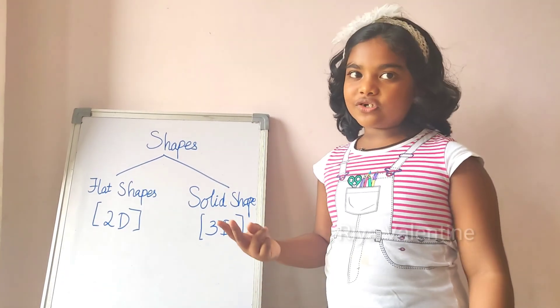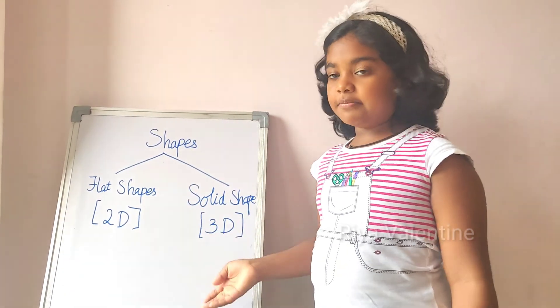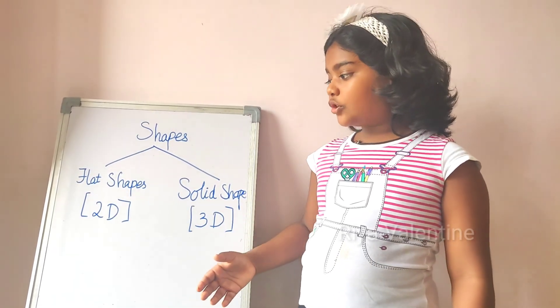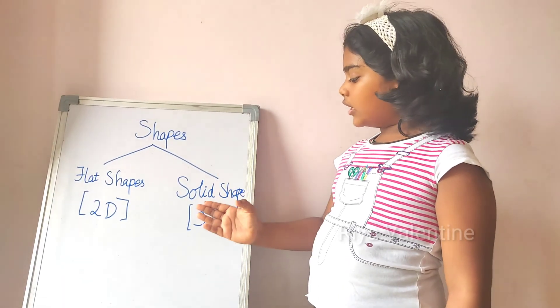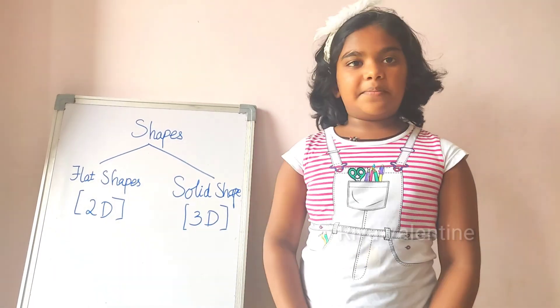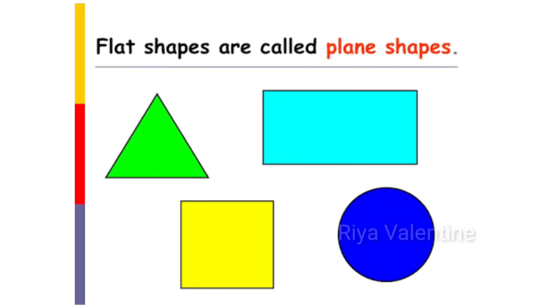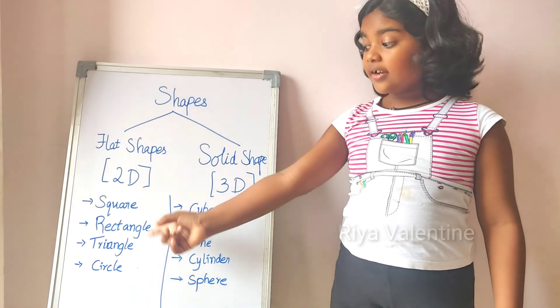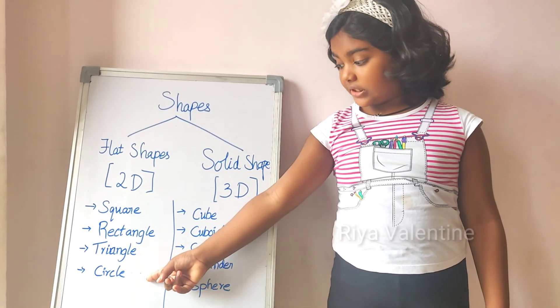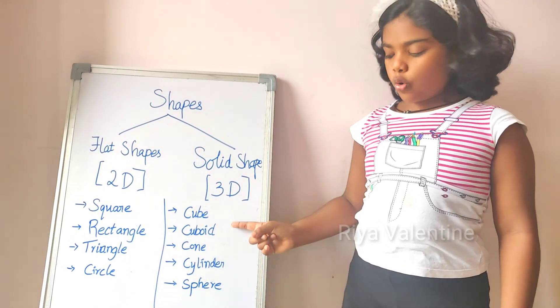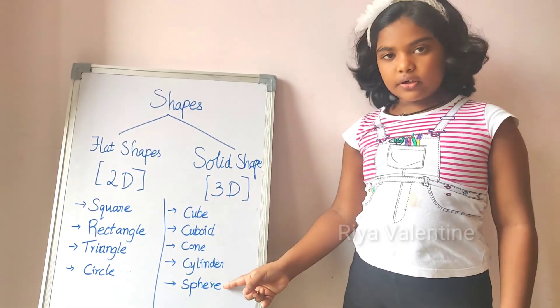Shapes are all around us. In shapes, we have two types. One is flat shapes, another is solid shapes. We can also call flat shapes as 2D shapes, and we can also call solid shapes as 3D shapes. In flat shapes, we have square, rectangle, triangle, and circle. In solid shapes, we have cube, cuboid, cone, cylinder, and sphere.